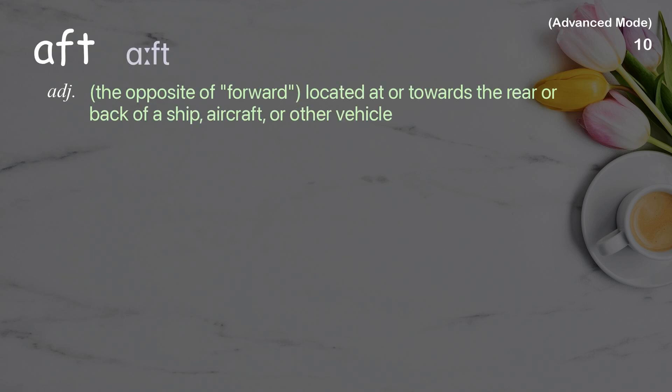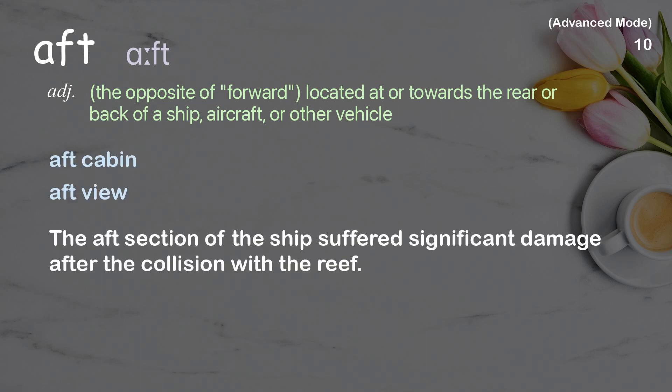Aft. The opposite of forward, located at or towards the rear or back of a ship, aircraft, or other vehicle. Examples: Aft cabin. Aft view. The aft section of the ship suffered significant damage after the collision with the reef.